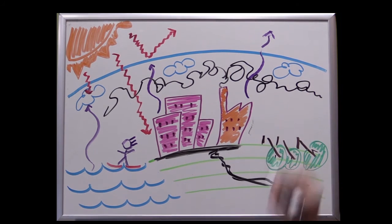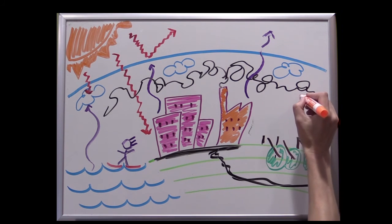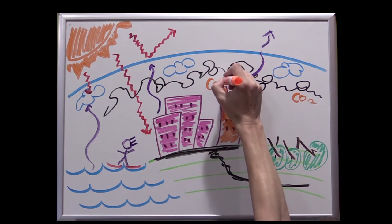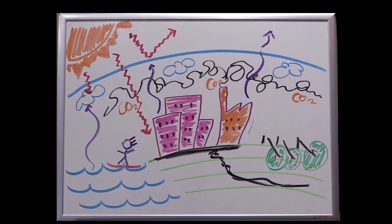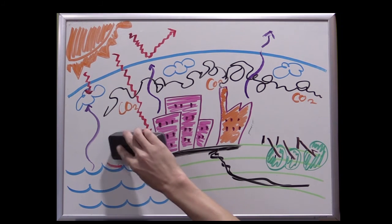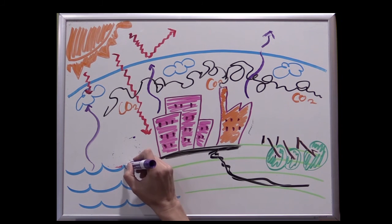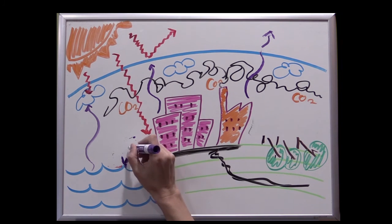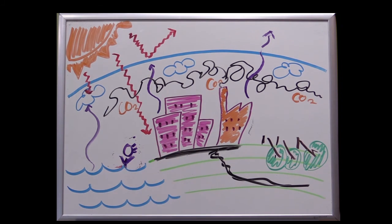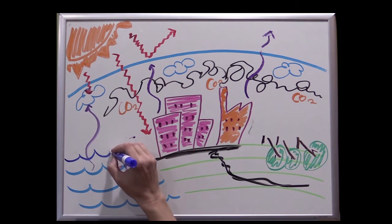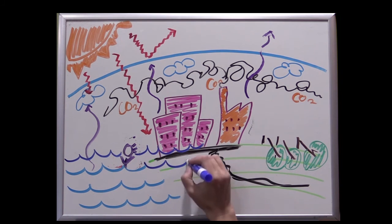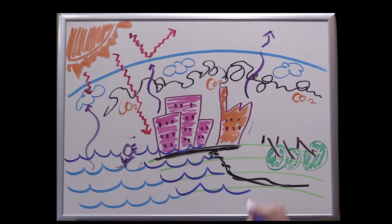Ice core data helps us reconstruct gas concentrations throughout history. For the last 400,000 years, until the Industrial Revolution, CO2 concentrations ranged from about 200 to 280 parts per million. That rapid increase in human combustion of fossil fuels since the Industrial Revolution has increased carbon that has otherwise been locked up underground for thousands, if not millions of years. This throws the natural greenhouse effect out of kilter.